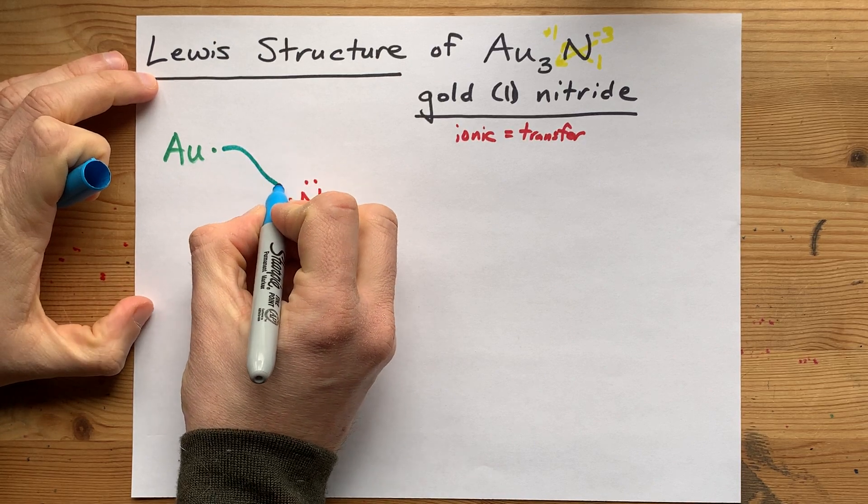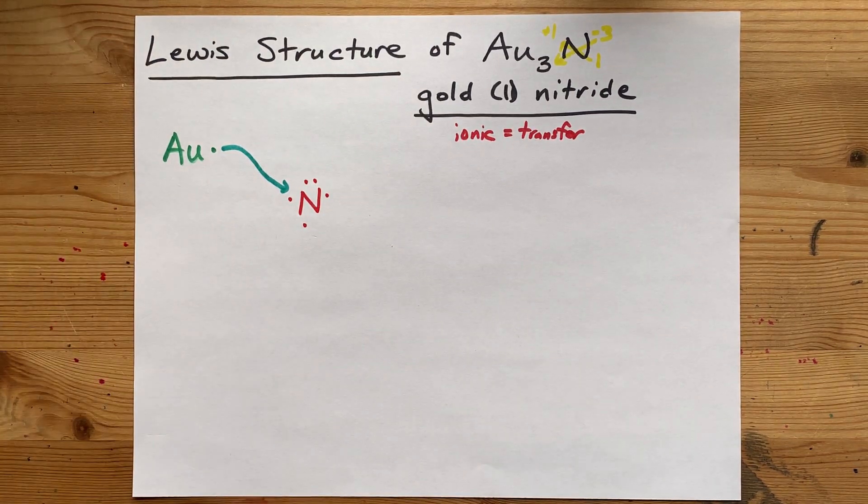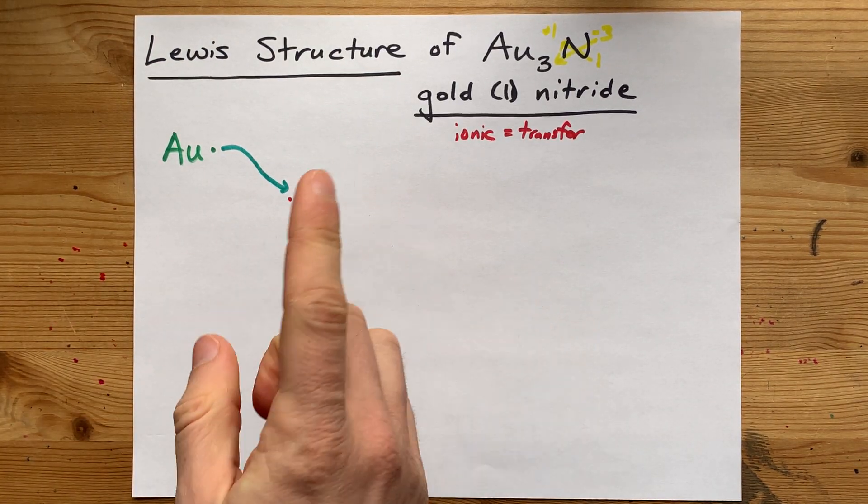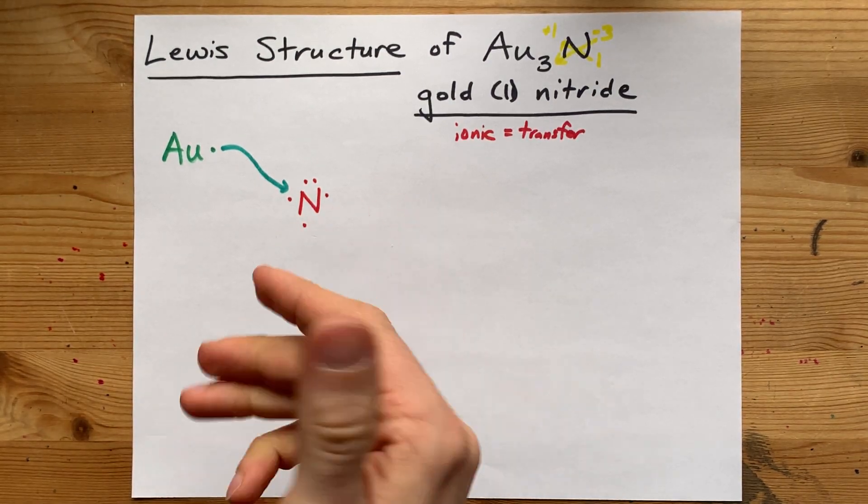Well, this gold will give away its one electron to the cause. Now, nitrogen has six, which is closer, but it's not quite enough.